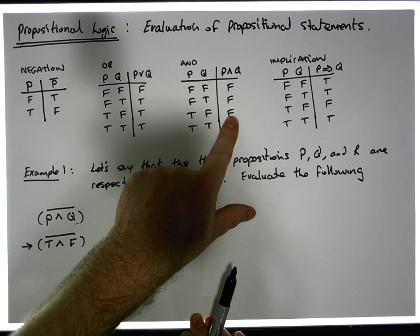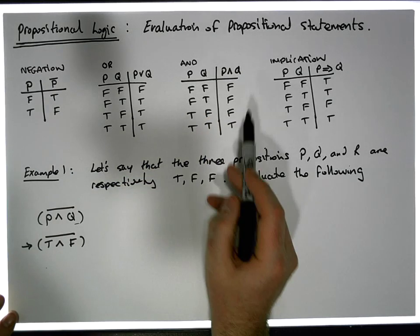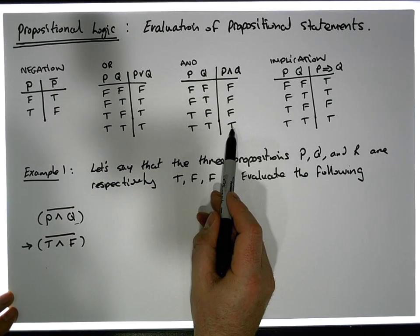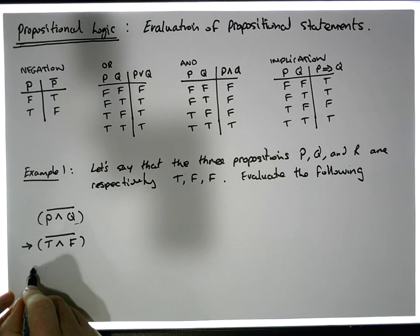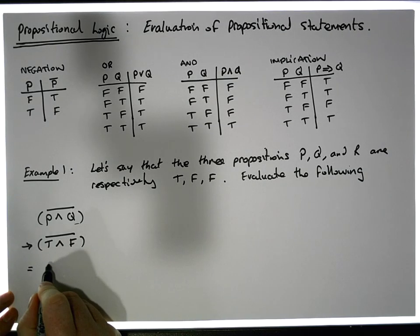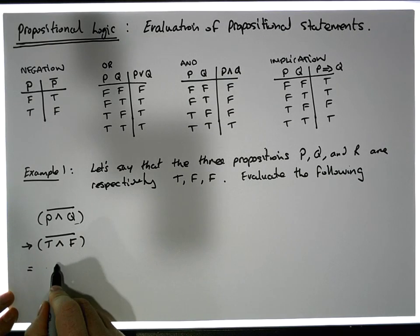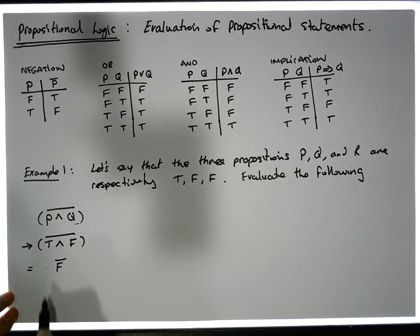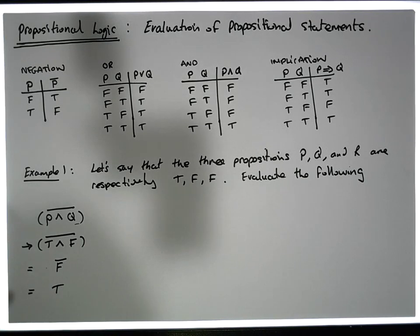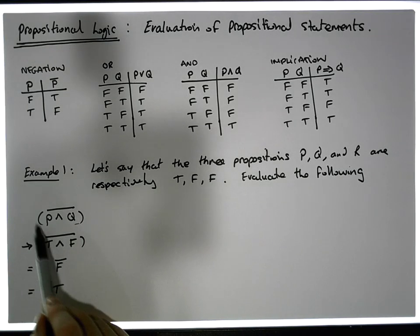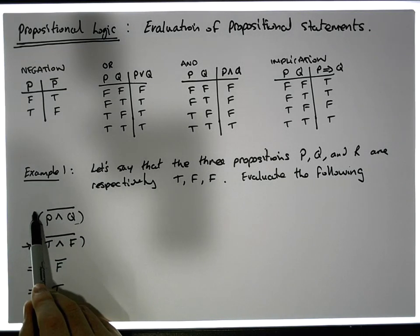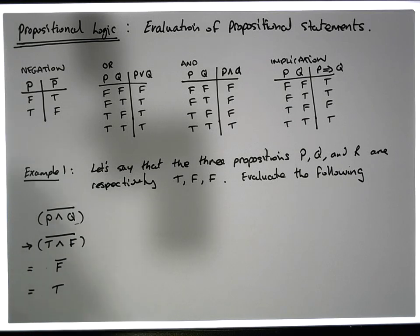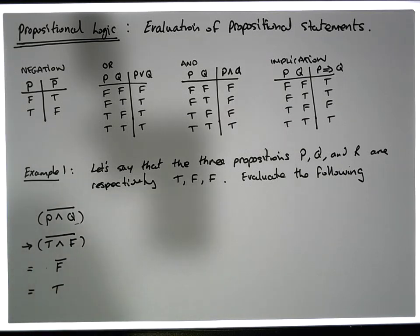The AND evaluates to false, which is what we know — AND only ever evaluates to true when both of them are simultaneously true. So T ANDed with false is false, so that evaluates to false, and we still have to do the negation. When we do the negation, this is equal to true. So this compound proposition — the negation of P ANDed with Q — evaluates to true when P is true and Q is false.